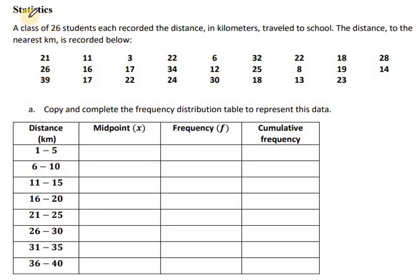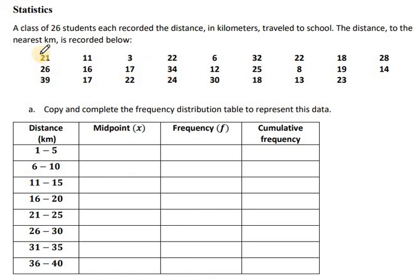We have a statistics topic here. A class of 26 students each record a distance in kilometers traveled to school. The distance to the nearest kilometer is recorded. We have 26 records of the distance students travel to school — for instance, one student traveled 21 kilometers and another traveled 11 kilometers to school.